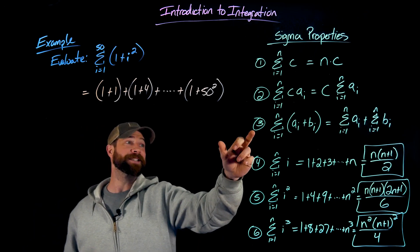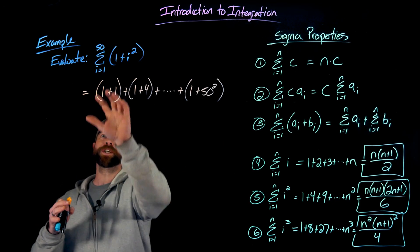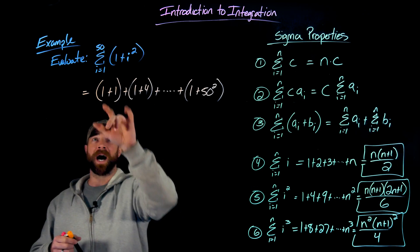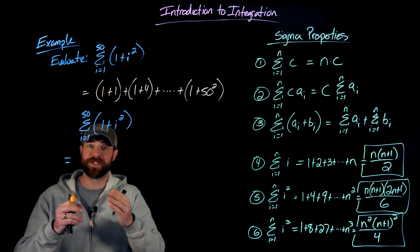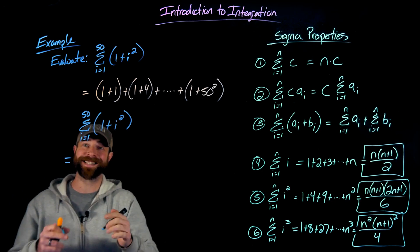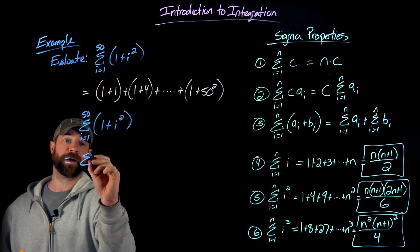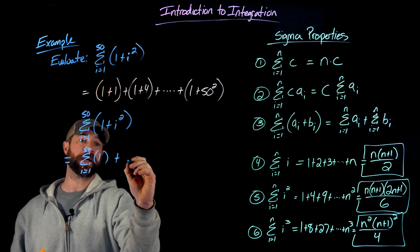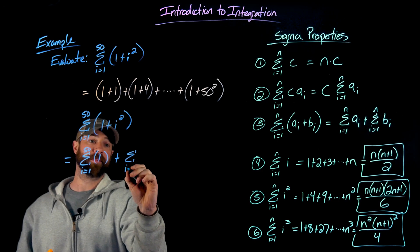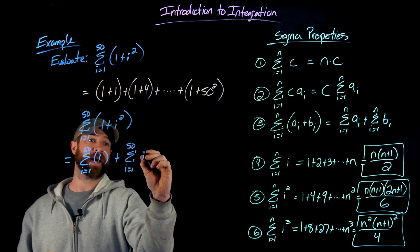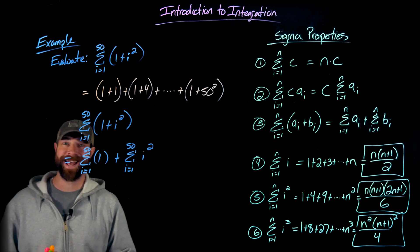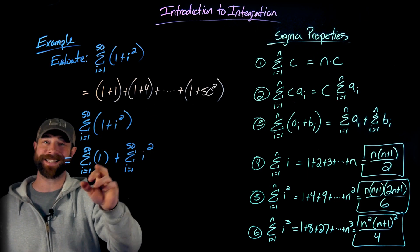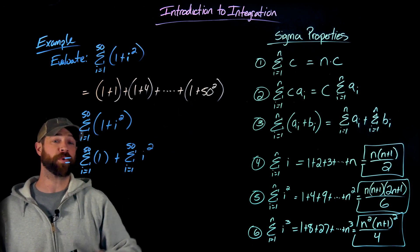The first property I'm going to use is number three right here, which lets me look at this and say, aha, each term is in terms itself. I can rewrite this as two separate summations being added together. So I would have the sum from one to 50 of just the number one plus the sum from one to 50 of i squared. Then both of these are properties that I have over here. This is simply that idea of repeated addition of the constant right here, number one. So this first sum, I can just calculate by taking 50 times that constant of one.